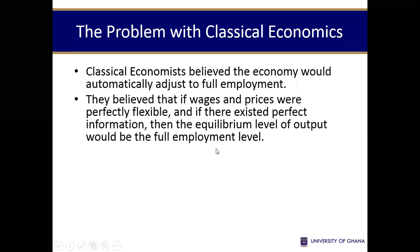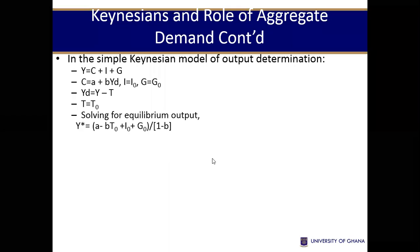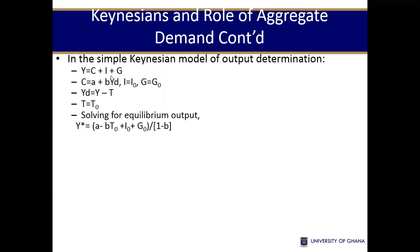Adam Smith believed in the self-adjusting nature of the economy, and that was one belief that Keynes was trying to counter. So in the Keynesian model, Y depends on the summation of consumption, investment, and government expenditure. Consumption is given as autonomous consumption A, plus income-induced consumption — B is the marginal propensity to consume — times disposable income, which is personal income minus tax.